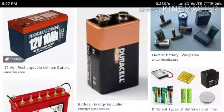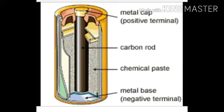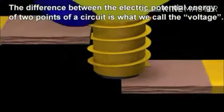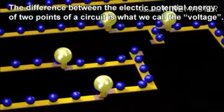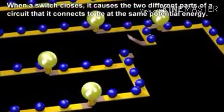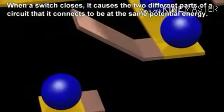Now you must be wondering how this cell gets those extra electrons. There are various types of cells available in the market, and you have already studied in 8th standard that a cell has chemical paste, a carbon rod, and a metal base, because of which a chemical reaction takes place and positive and negative ions are formed. These ions have positive or negative charge due to electrons. So basically, electrons are present in the cell due to chemical reaction. The potential difference is caused by chemical reactions occurring inside the cell, and this potential difference sets the electrons in motion, resulting in the flow of electricity through a conducting wire connected to the two ends of the cell.